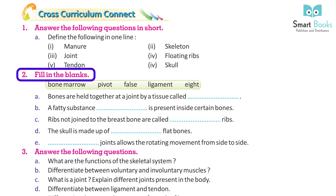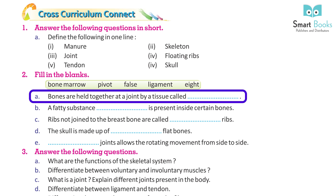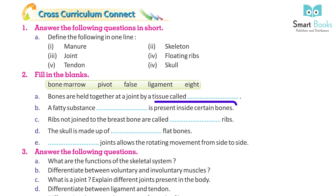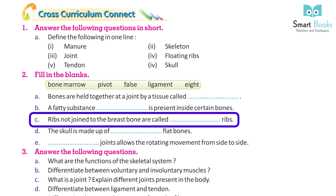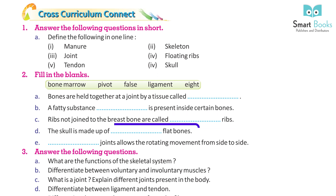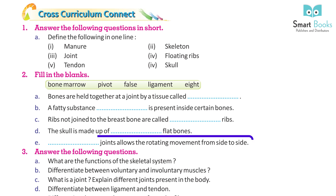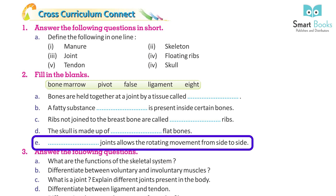Fill in the blanks: A. Bones are held together at a joint by a tissue called ___. B. A fatty substance ___ is present inside certain bones. C. Ribs not joined to the breast bone are called ___ ribs. D. The skull is made up of ___ flat bones. E. ___ joints allow the rotating movement from side to side.